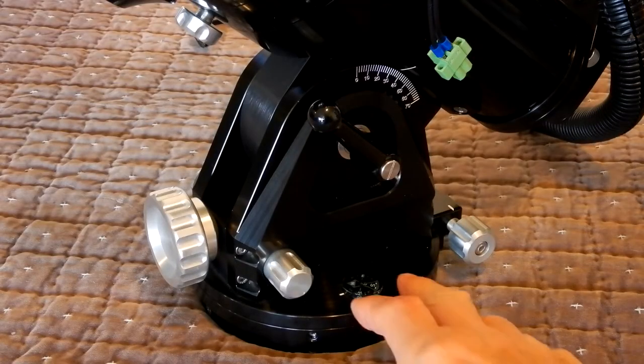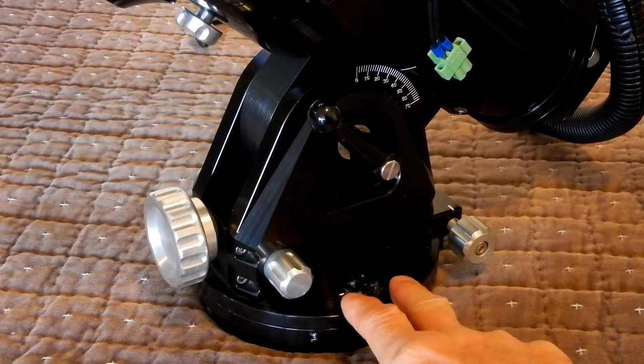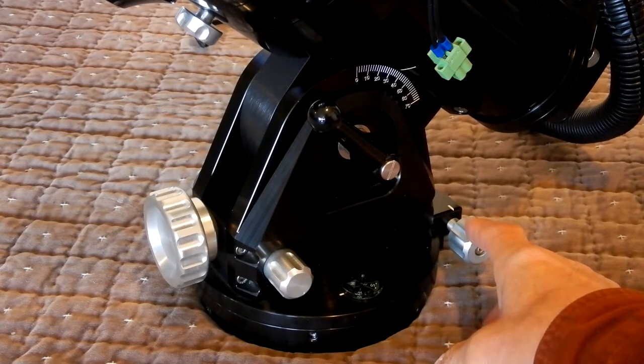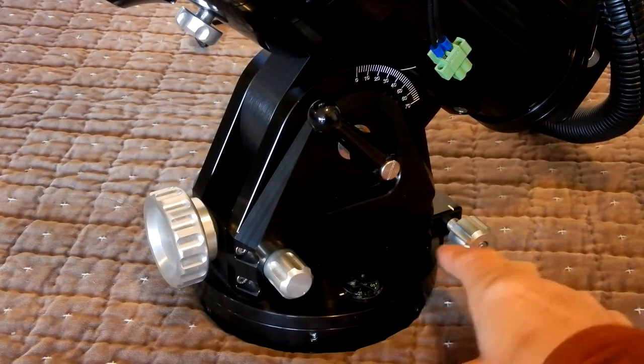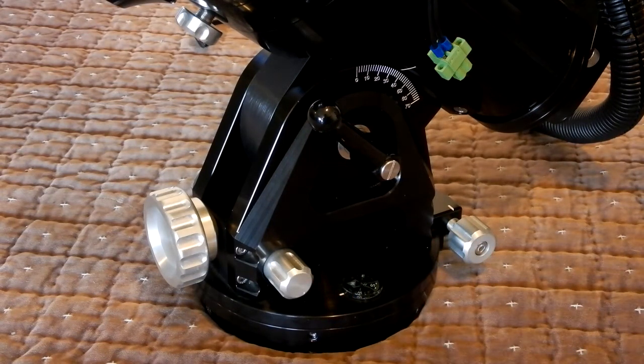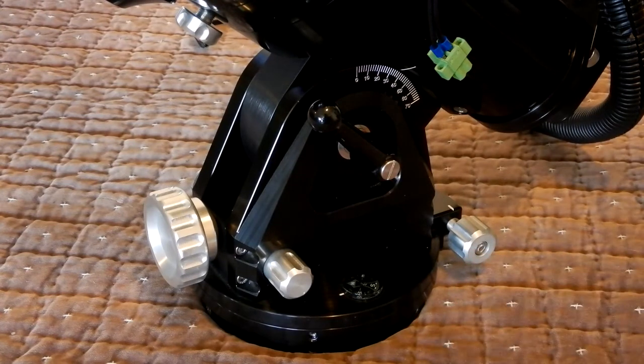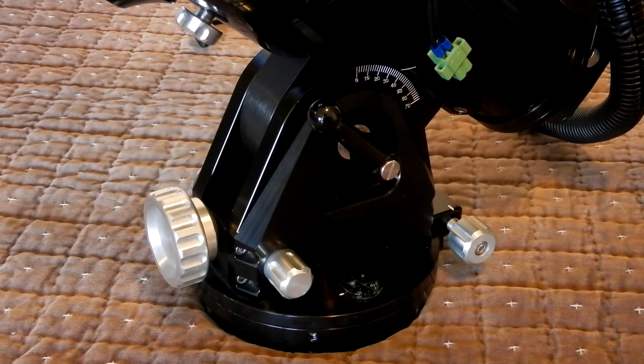One thing I want to point out on Tom's Mach 1 is that he did the upgrade kit, as I did when I got mine. He had the older version where your azimuth adjuster for aligning to the pole was in front, and it's so much nicer in the back. It is called the Mach 1 GTO precision adjust rotating base high res azimuth adjuster upgrade kit. It is the M1 RAUP.